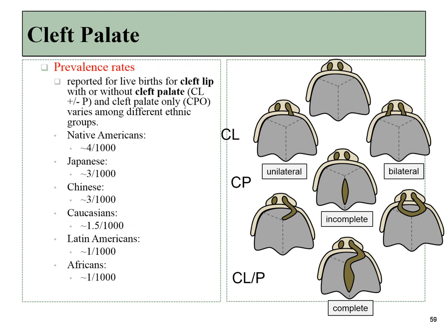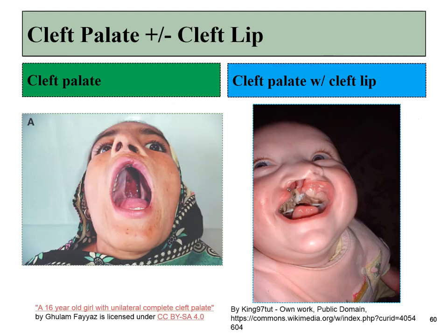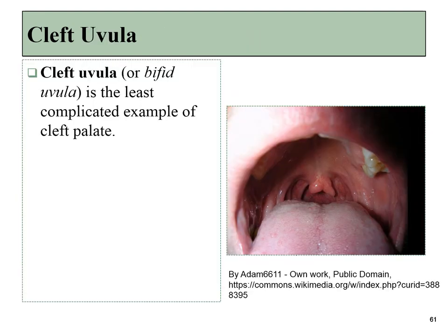Cleft lip and cleft palate are more common in Japanese, Chinese, and Native American populations. The lowest rates of prevalence are for those of African descent. A cleft uvula can also occur, and this is the least complicated example of any malformations occurring during the development of the palate.